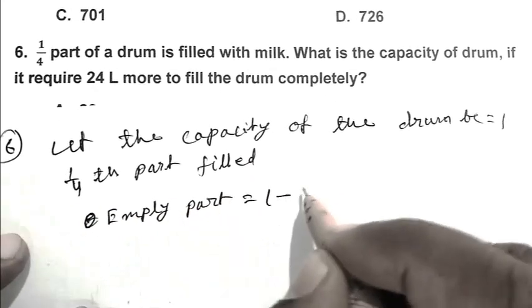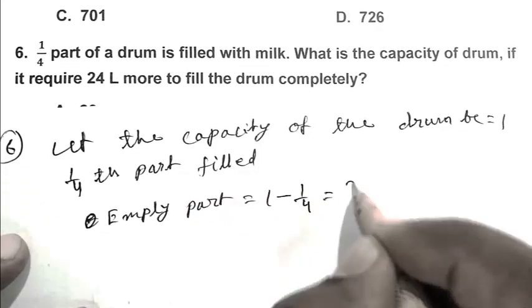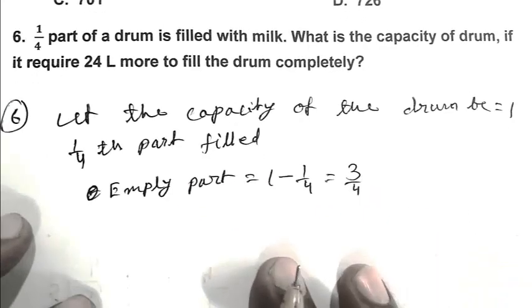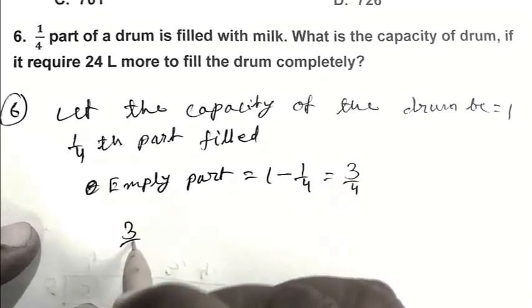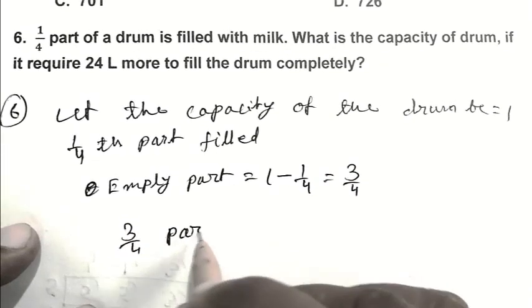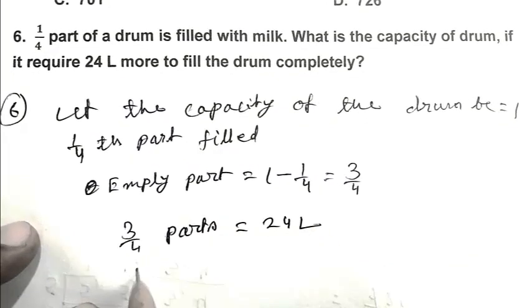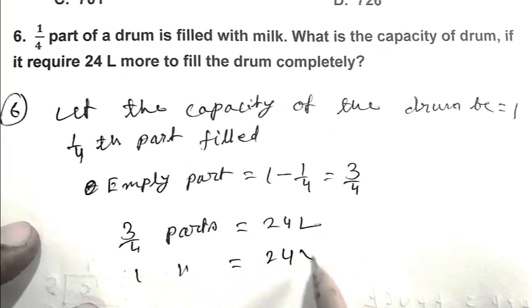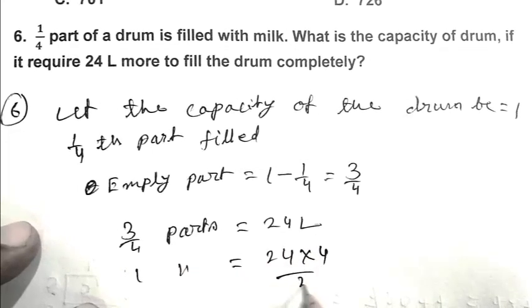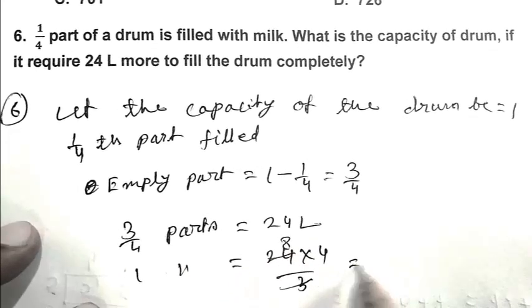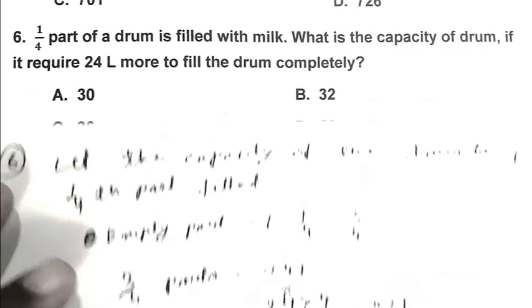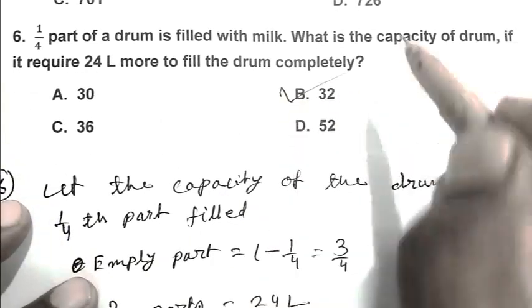Empty part is 1 minus 1 fourth, which is 3 fourth. According to the question, 3 fourth equals 24 liters. So 1 fourth equals 24 times 4 upon 3, which is 32 liters. B is the right answer.